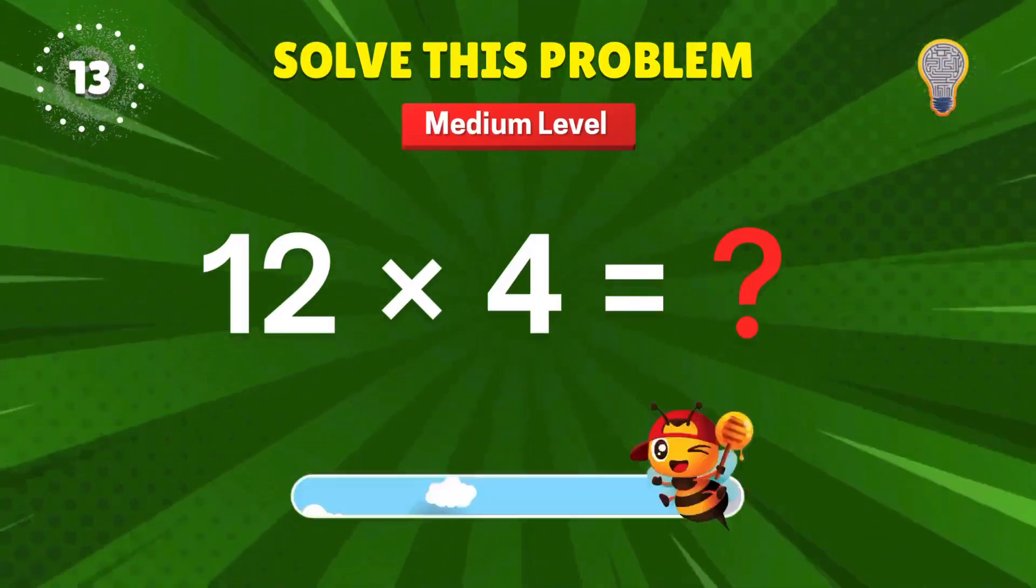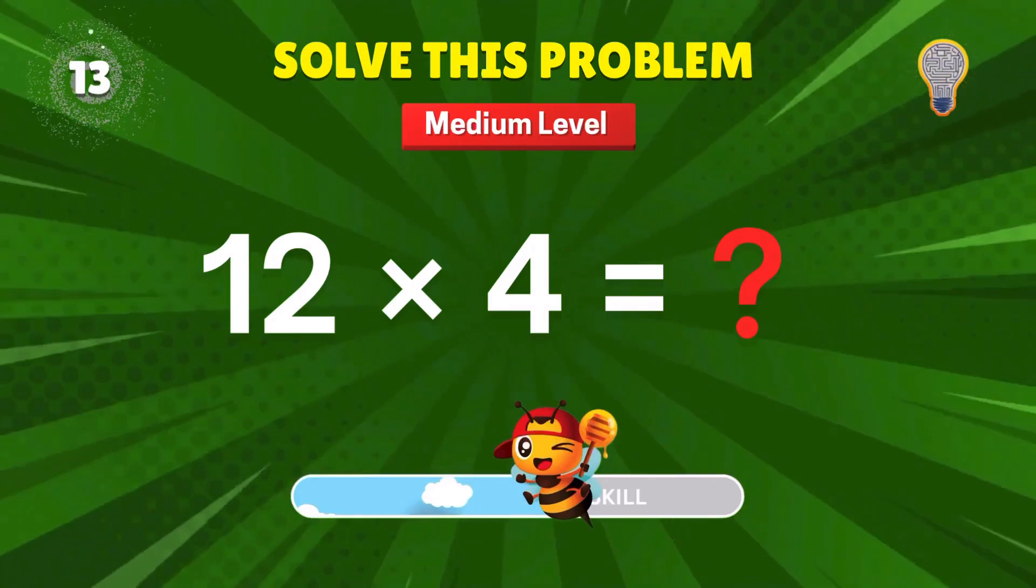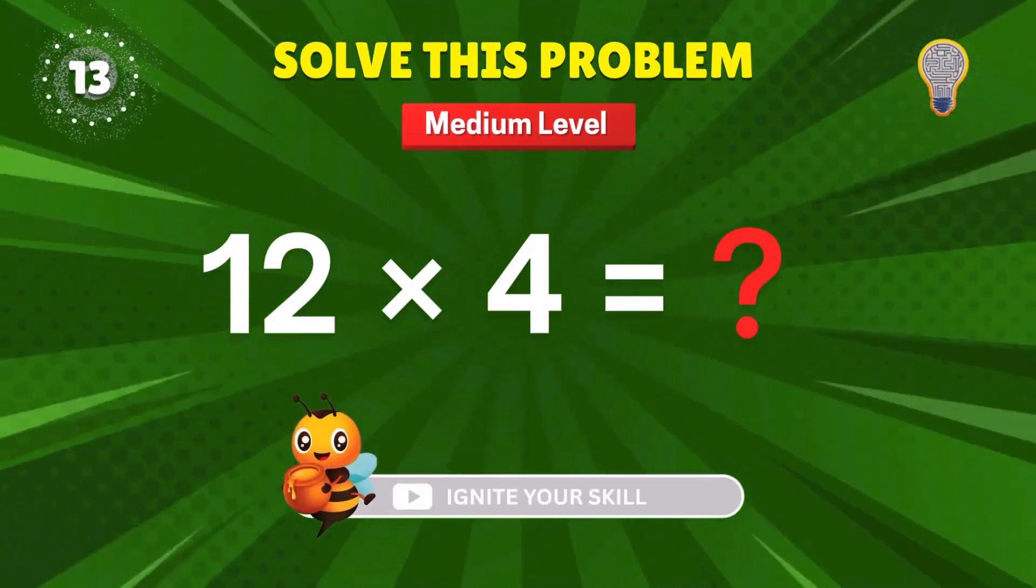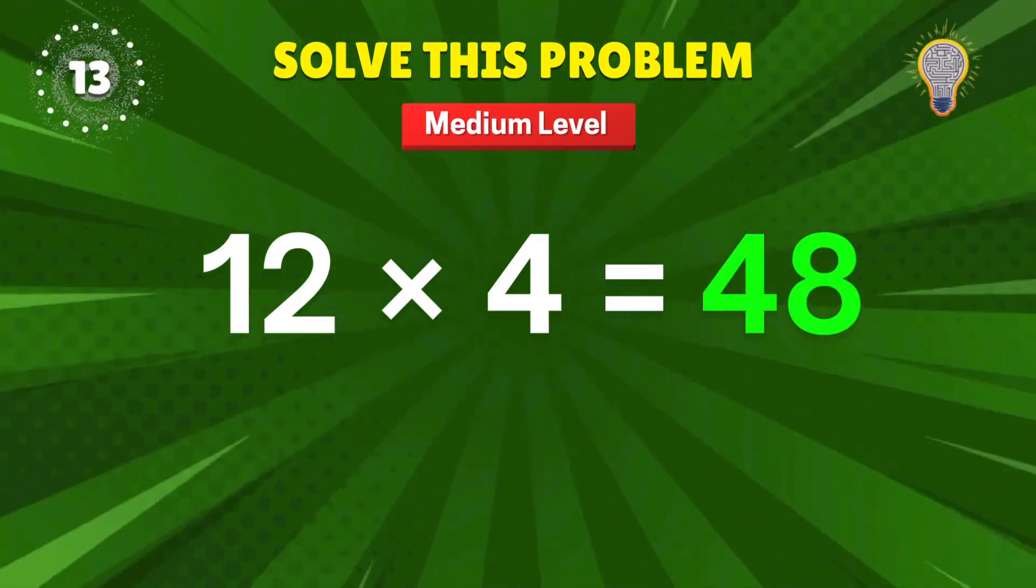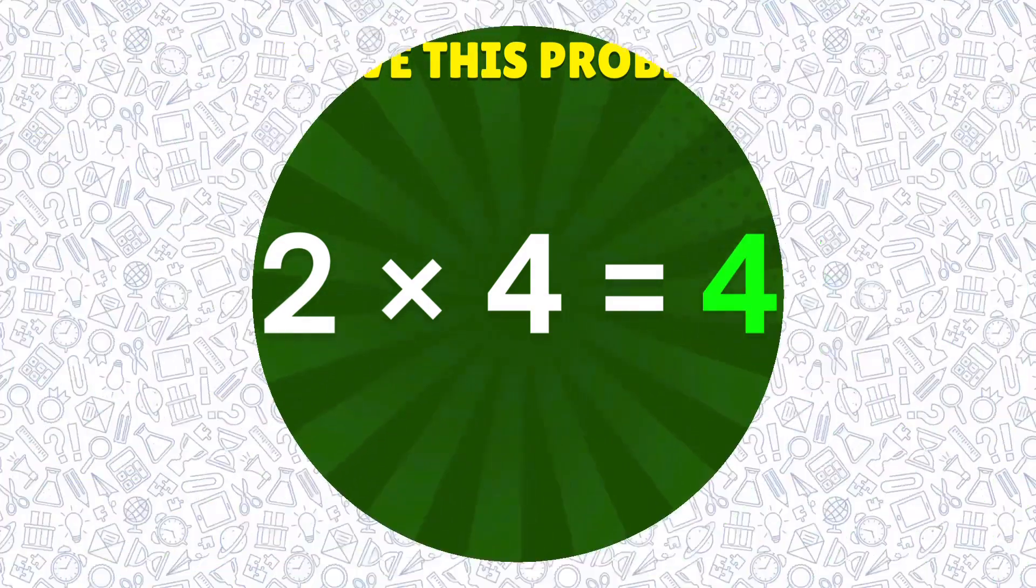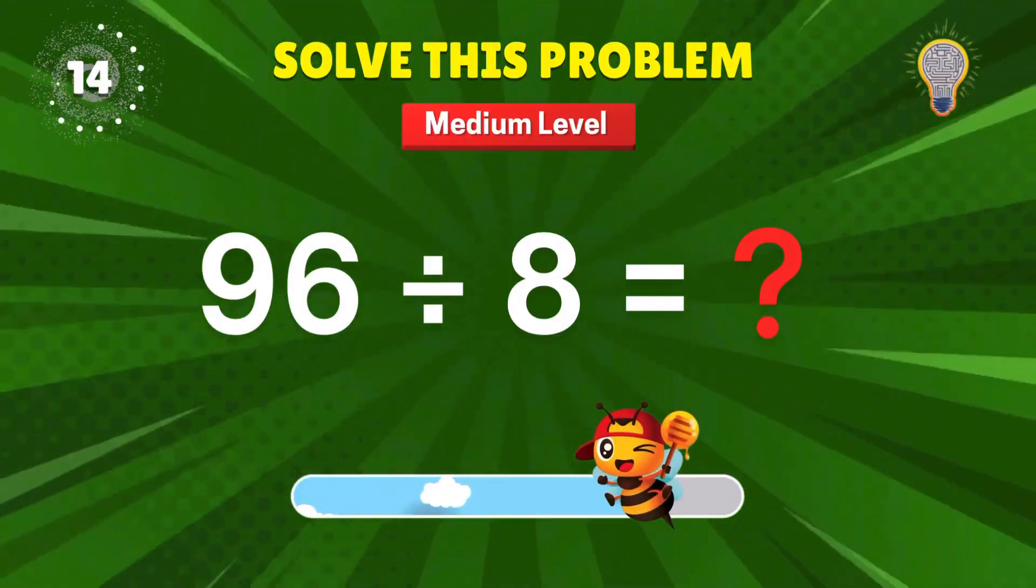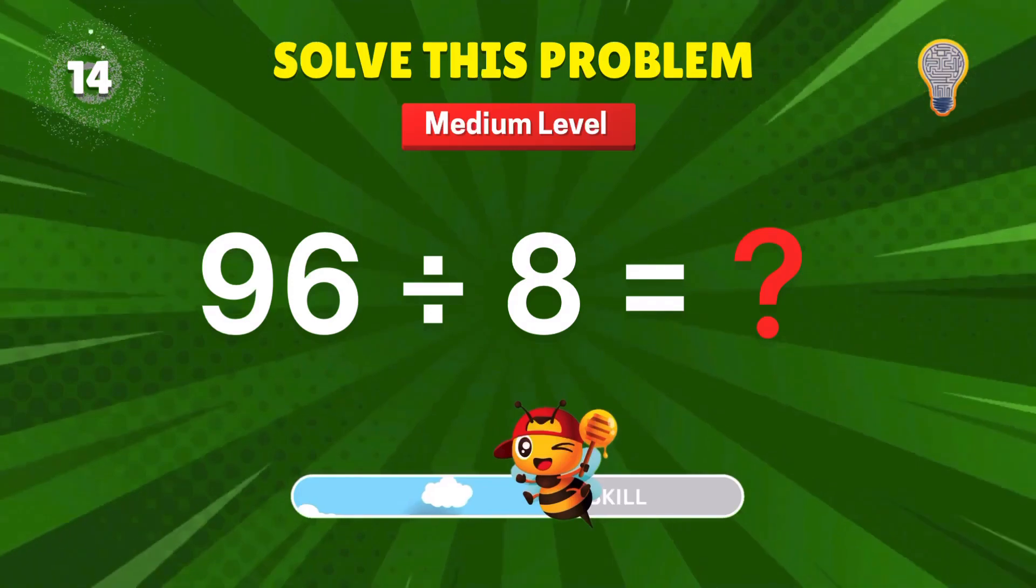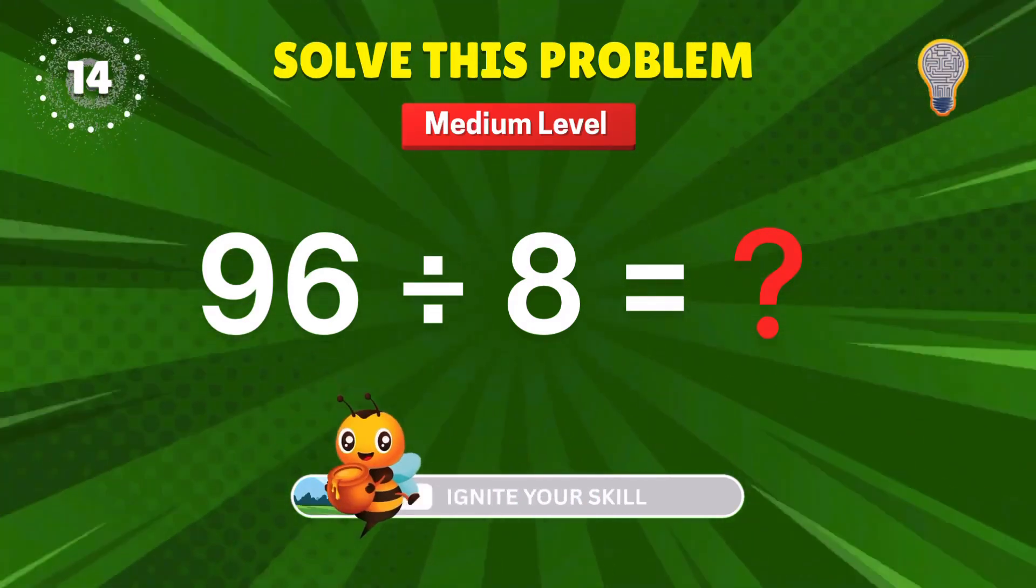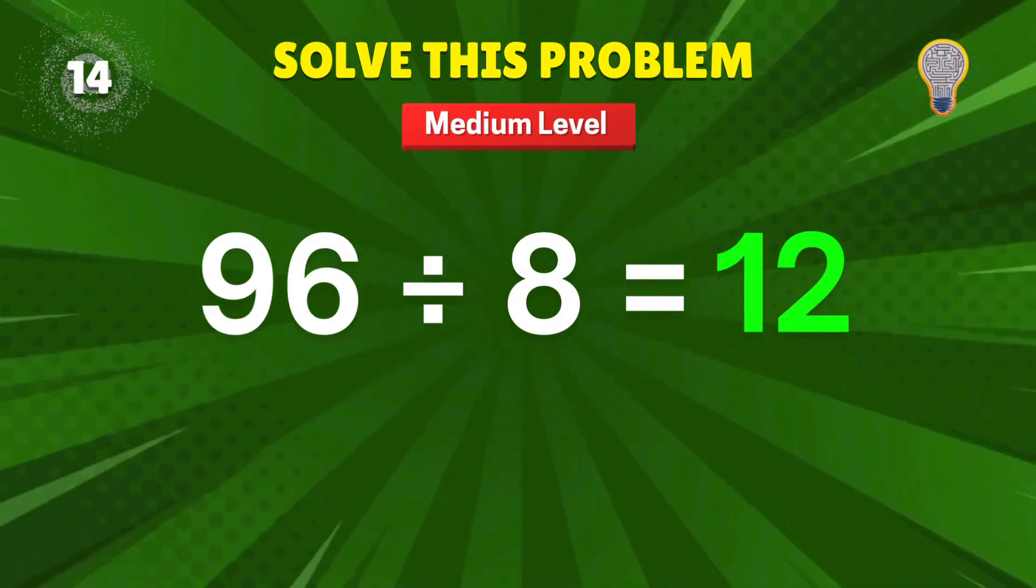12 times 4? Just imagine 4 boxes with 12 chocolates each. 48. That's a sugar high and a point. 96 divided by 8? Even your dog can bark this answer. Rough math. Score plus 1.